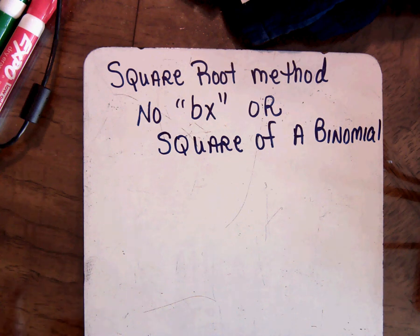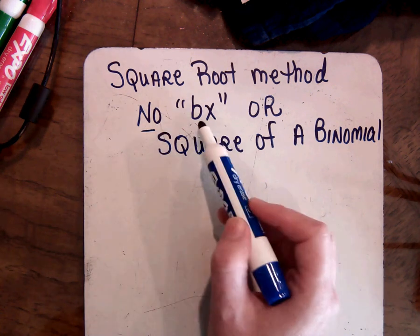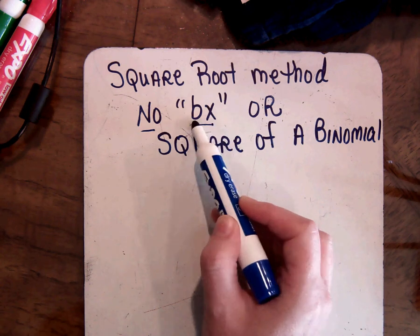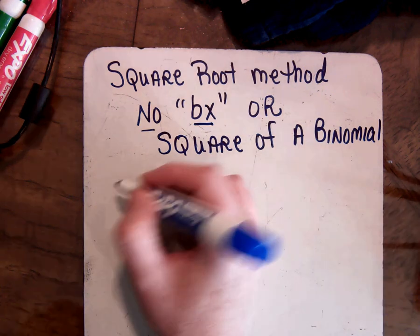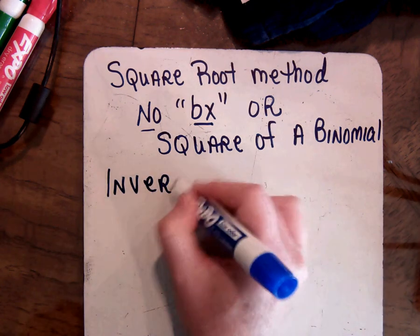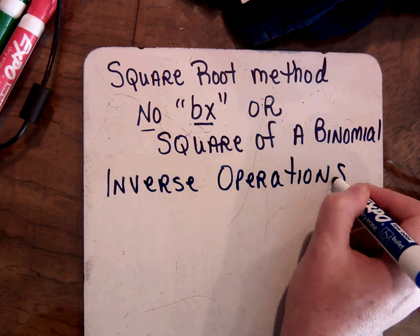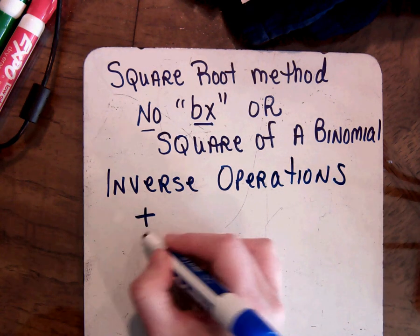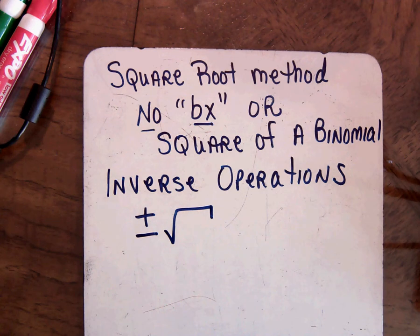Okay, so this lesson is just going to be a quick review of solving quadratic equations by using the square root method. I just wanted to remind you that we can use this method when we're missing that bx term, that b term, or if we have square of a binomial. And remember, one of the great things about this method is that we're just simply using inverse operations. And we have to remember when we take the square roots to do plus or minus the square root. So that's two of the biggest things to remember about that.